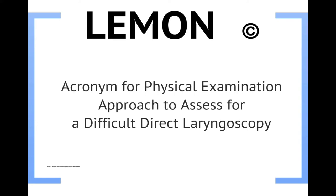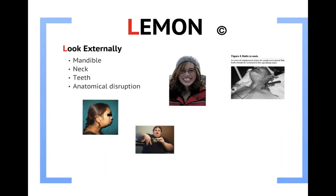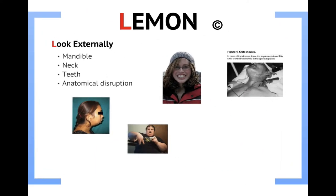This is right out of Walls and Murphy's book, The Manual of Emergency Airway Management — an important concept. All of these acronyms are available for you in Moodle so you can review them at your leisure. When we talked about MOANS, that was to predict difficulty with bag valve mask ventilation. Now we're going to employ this new acronym, LEMON, which allows us to predict difficulty with intubation using direct laryngoscopy.